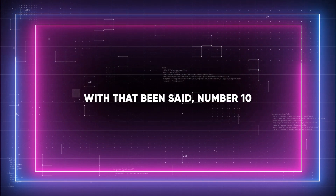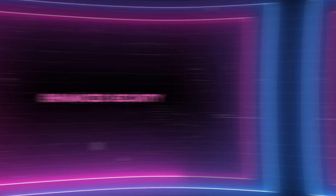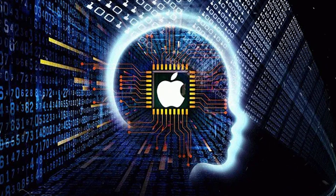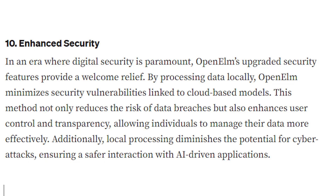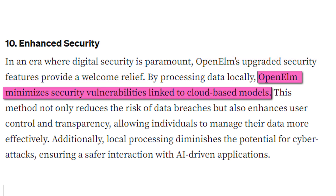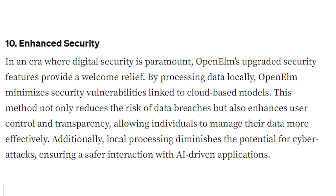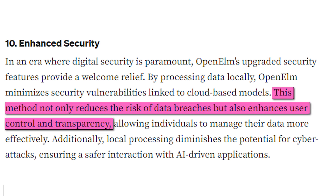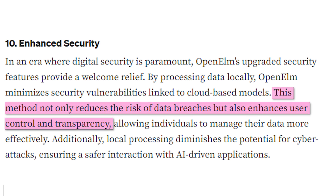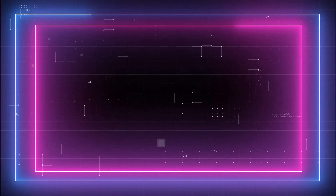Number 10: enhanced security. Since user data and AI processing are kept local on your device, Open ELM's increased security measures provide a break from the ongoing concerns of cyberattacks and data breaches. Open ELM steers clear of many of the security flaws in cloud-based AI models, which frequently involve intricate and delicate network infrastructures. This localization approach lowers the risk of data exposure, while also promoting increased user control and transparency, enabling people to manage their data more effectively.